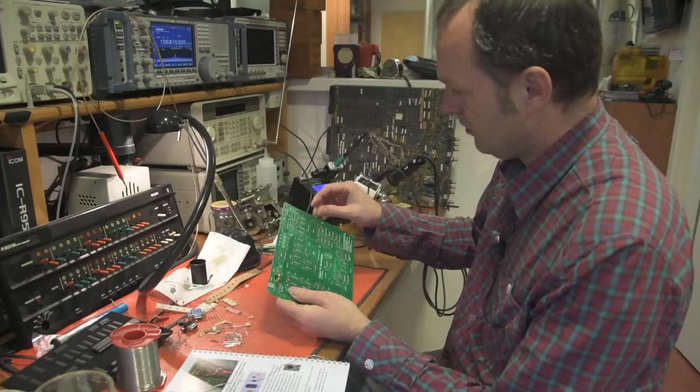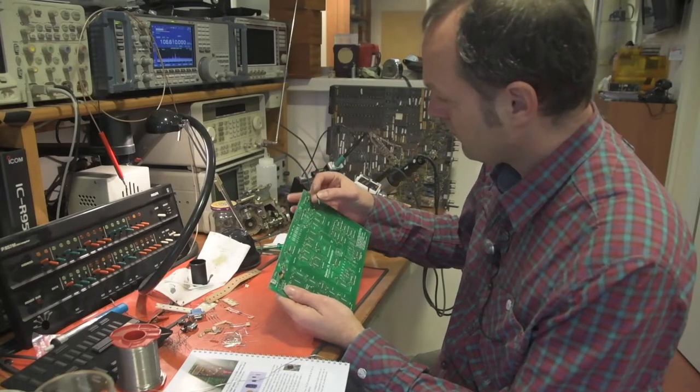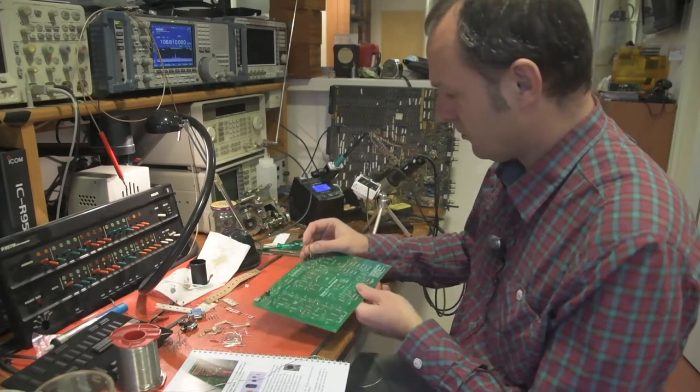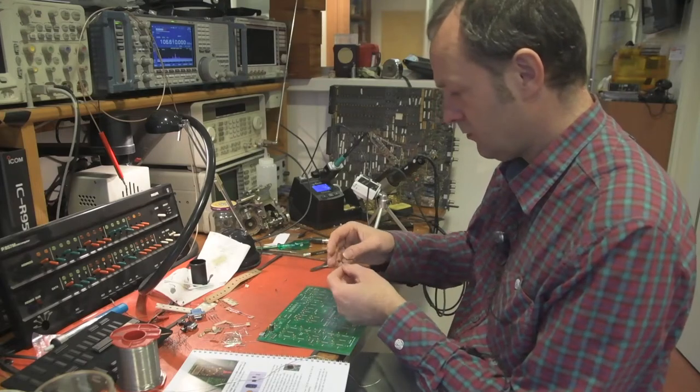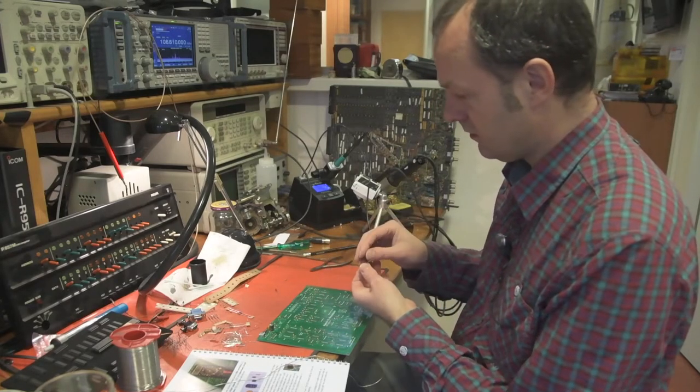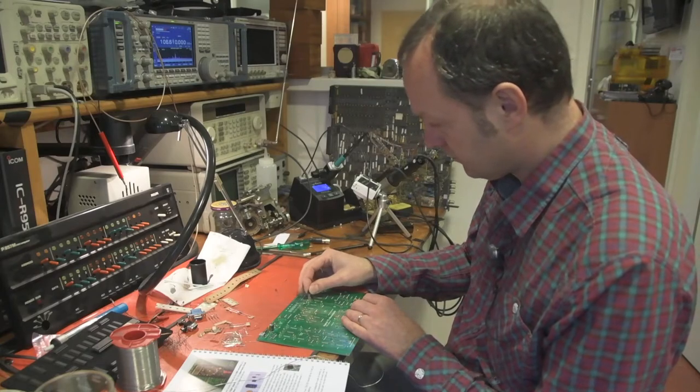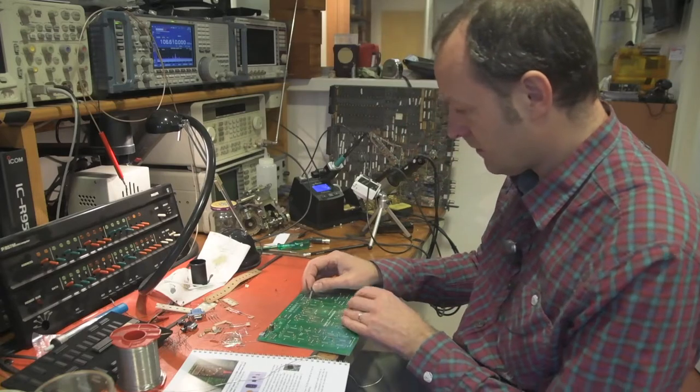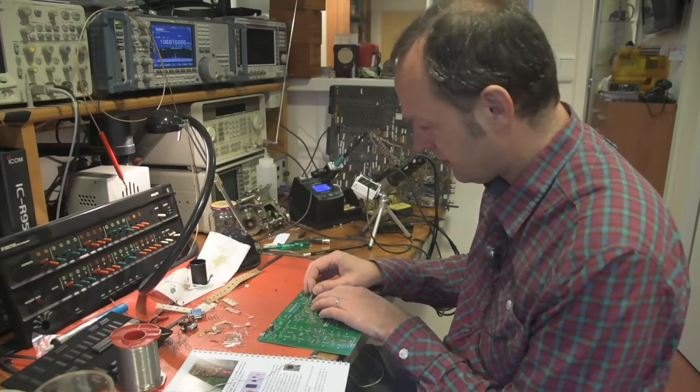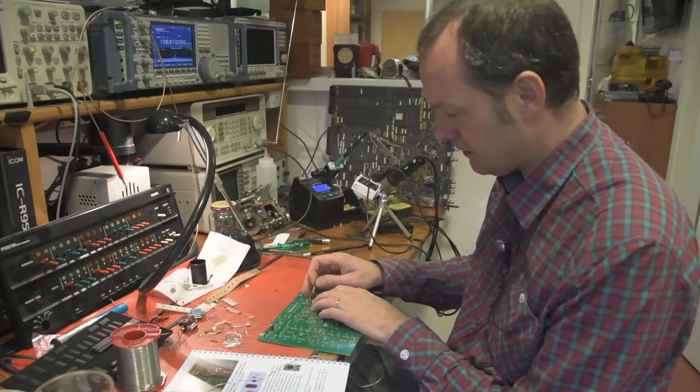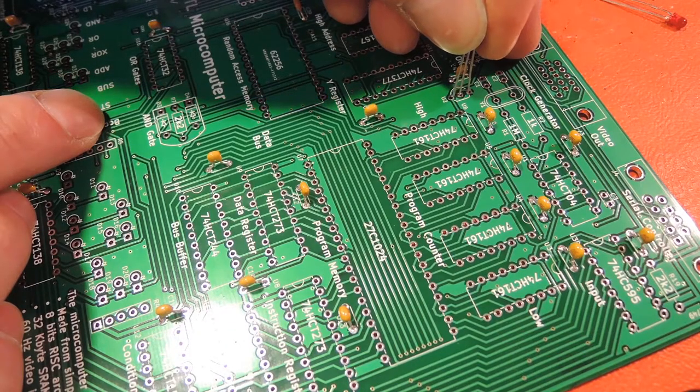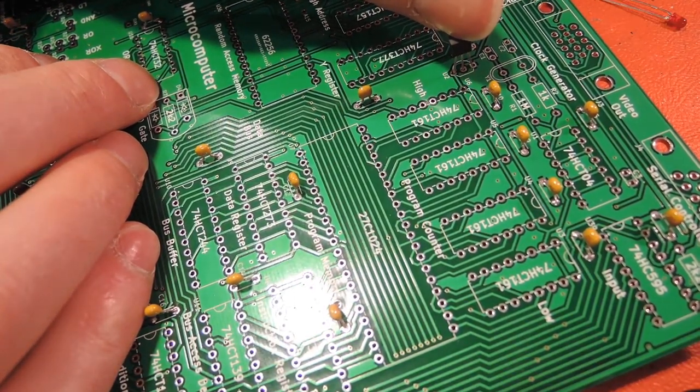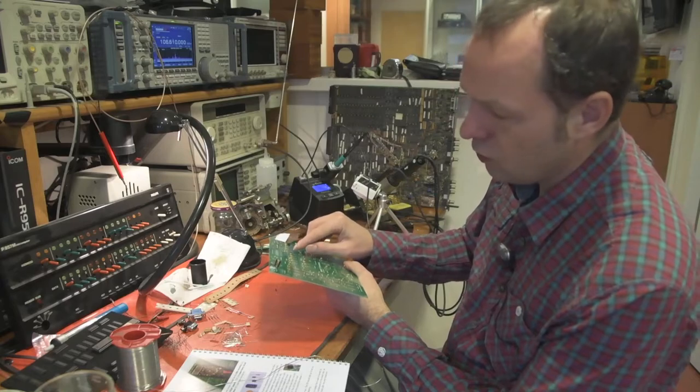Now the supervisory circuit is over here. Again, orientation matters. So there is a flat side printed, which should match the flat side of the component. Now here we see this is the only component where the spacing between the pins does not exactly match the spacing on the PCB. So we need to fiddle around a little bit to get all the pins in.